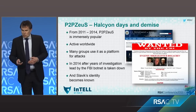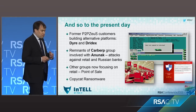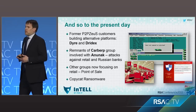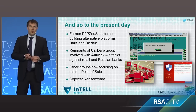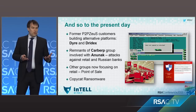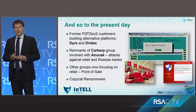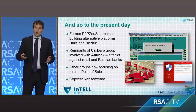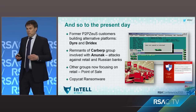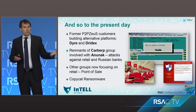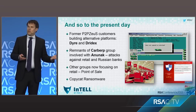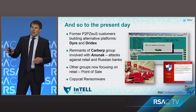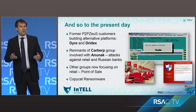With the demise of peer-to-peer Zeus, we come to the present day. Peer-to-peer Zeus may have gone around this time last year, but its customers still want to run attacks. At least two groups have decided to build and run their own platforms — these are two malware families currently making the news: Dyre and Dridex. And remember Carberp, our gentleman in his underpants? They're back as well — they've morphed and changed. Carberp is now called Anunak, and in the US and Europe they're using Anunak to go after retailers and point-of-sale terminals specifically, stealing credit card data. In Russia, they're using Anunak to target banks directly. They certainly haven't given up on targeting Russia.